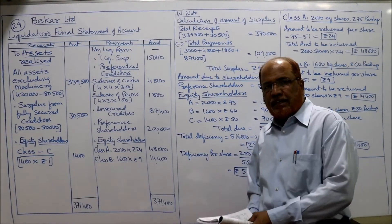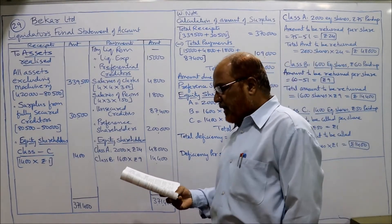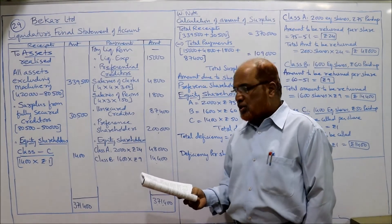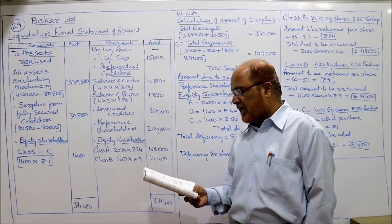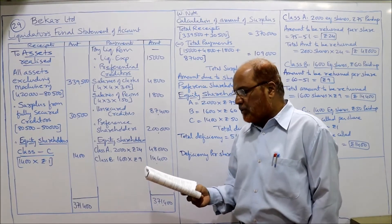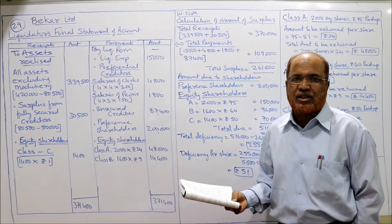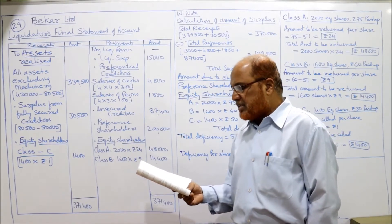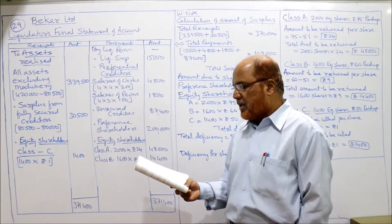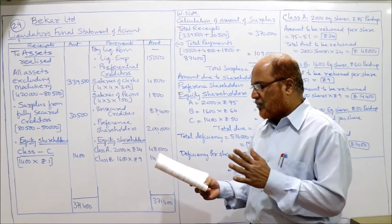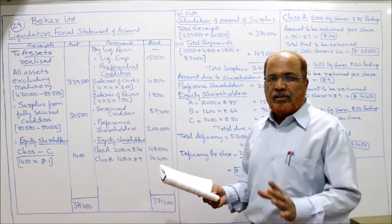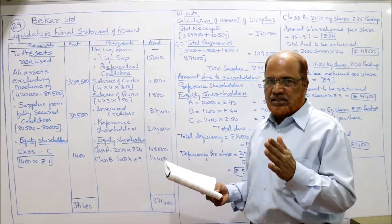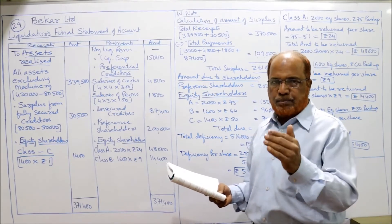We'll start Problem Number 29. Baker Limited went into voluntary liquidation. The details are as follows: two thousand 8% preference shares of rupees 100 each, fully paid — so preference share capital is two lakh rupees. Then Class A: two thousand equity shares of 100 each, 75 paid up. Class B: 1600 equity shares of 100 each, 60 paid up. Class C: 1400 equity shares of rupees 100 each, 50 paid up.